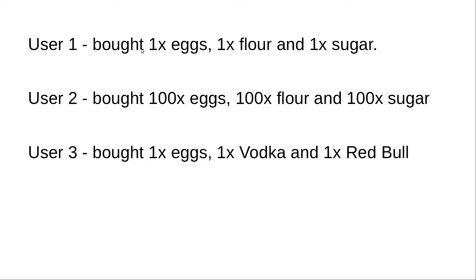But by Euclidean similarity, user three is more similar to user one. That's because user three and user one both bought 1x quantity of each item. User one bought flour whereas user three bought vodka, and user one bought sugar whereas user three bought Red Bull. So the items are different for user three, but because they bought the same quantity, by Euclidean distance metric user one and user three are more similar.